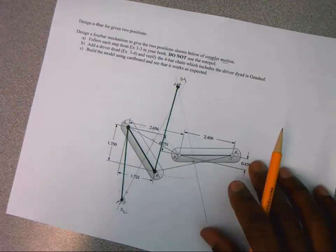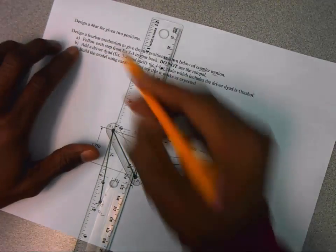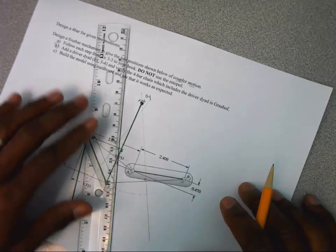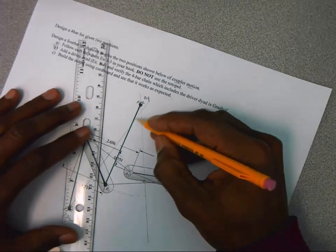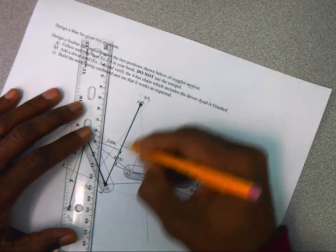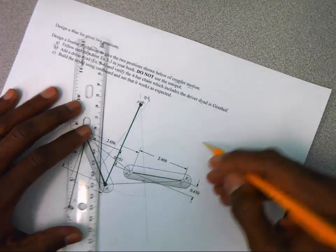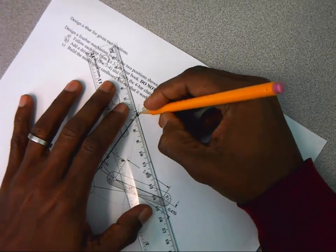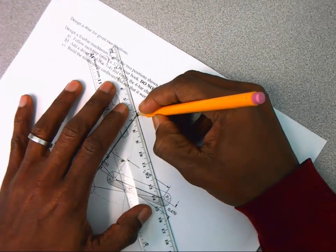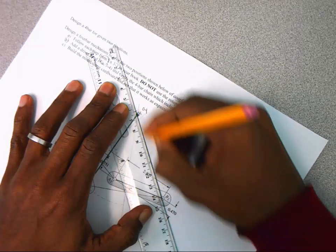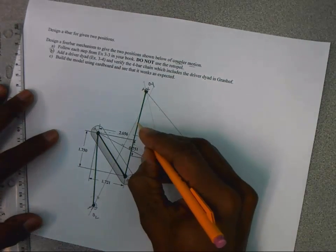So the first thing I need to do, this is now we're starting this second step, is I need to find out the extension of that rocker. So it goes from B1 all the way to B2. So I'm going to draw over here to B2. Draw a line here.